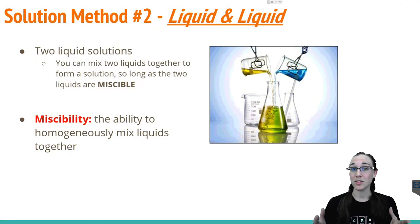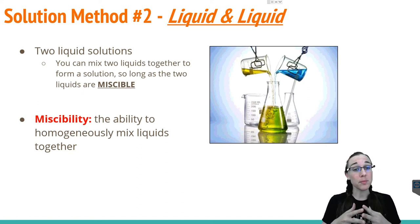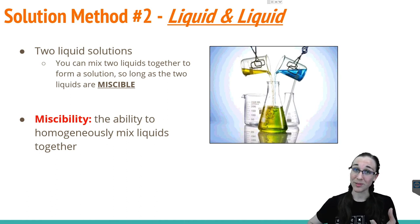So the second way you can make a solution or a dilution is to add two liquids together. And it's said that if those two liquids are miscible, meaning they actually have the ability to homogeneously mix together due to their similar IMF properties, then you can create a new solution or a dilution if one of your liquids happens to be water.